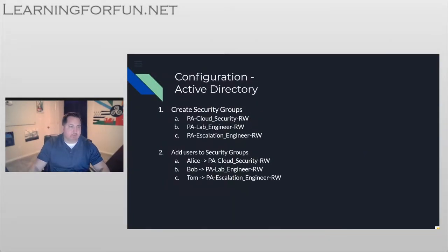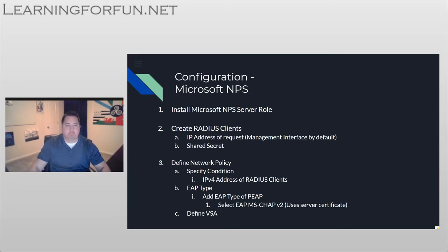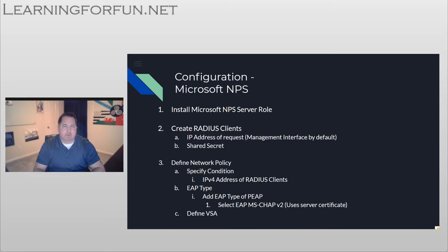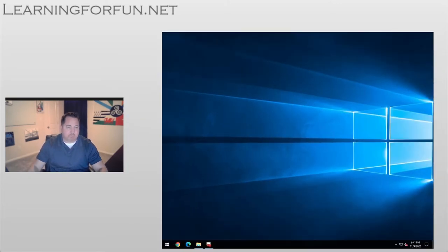Next we're going to install and configure the Microsoft NPS server. First we need to install the server role. After that we'll define our RADIUS clients — in this case Panorama, using its management IP address and a shared secret that both devices know. Once installed, we'll define the network policy, which includes matching the request sent by the RADIUS client using the IPv4 address. We'll select the EAP type, using PEAPv0 with MSCHAPv2, which requires a server certificate trusted by Panorama, and then define the VSA attributes we covered earlier.